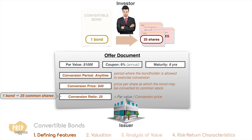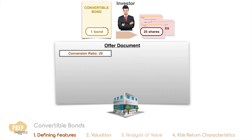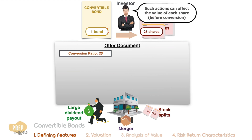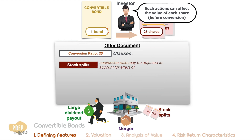While the conversion ratio is fixed at issuance, some corporate actions such as stock splits, large dividend payouts, or mergers and acquisitions after the issuance of the convertible bond may be unfair to the convertible bond holders. As such, offer documents may also include clauses to protect the interest of the investors. For stock splits, the conversion ratio may be adjusted to account for the effect of the split.